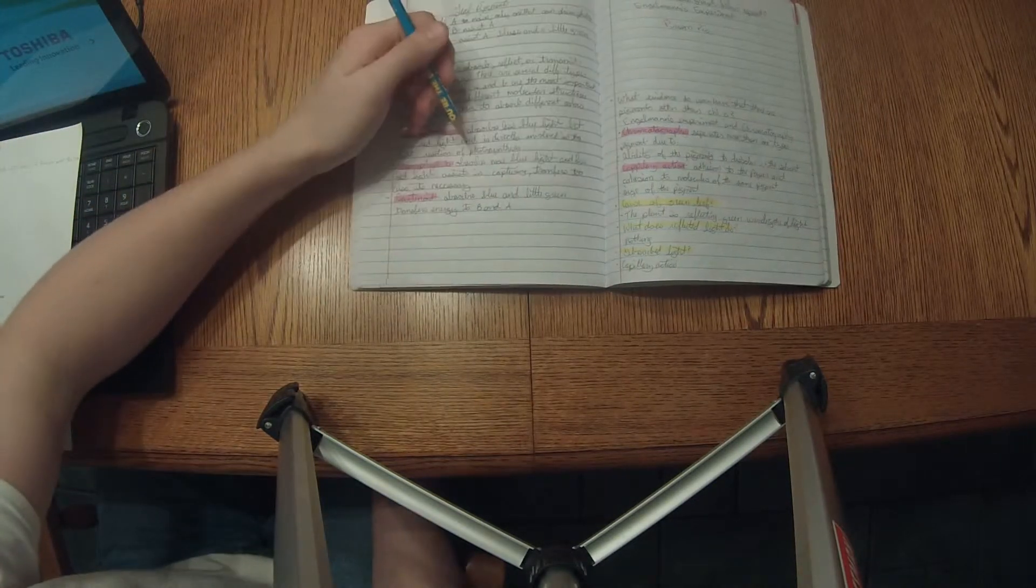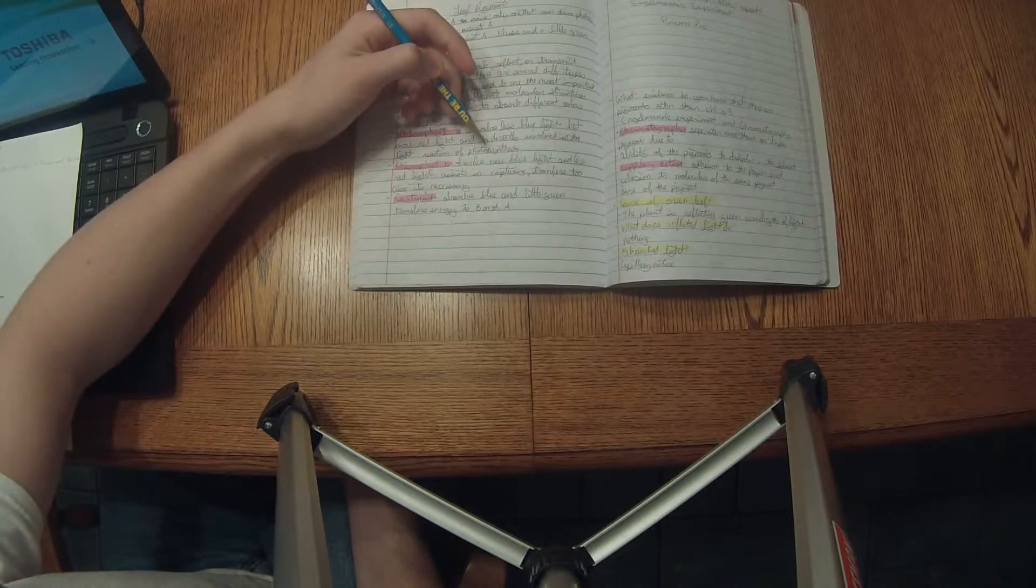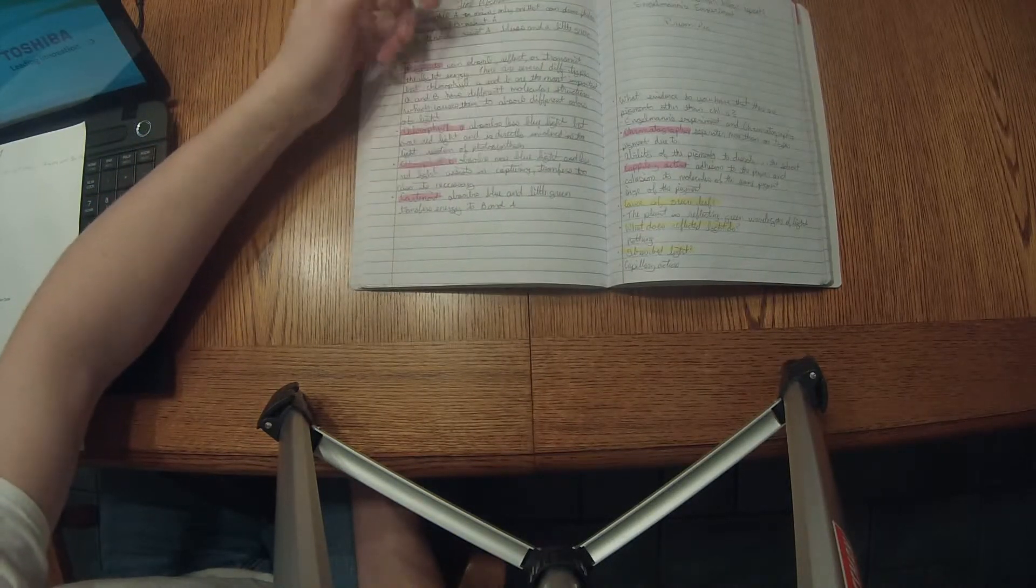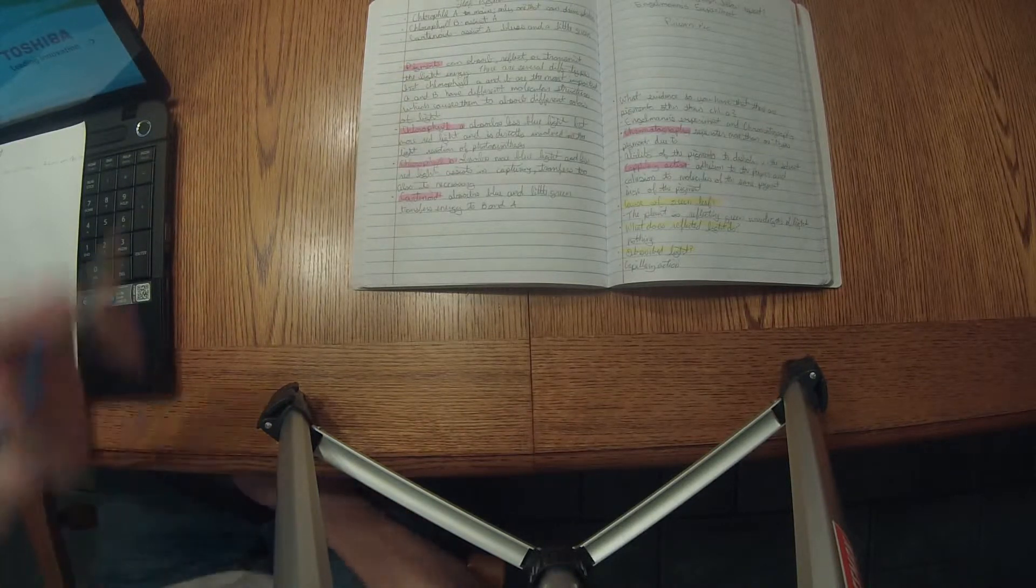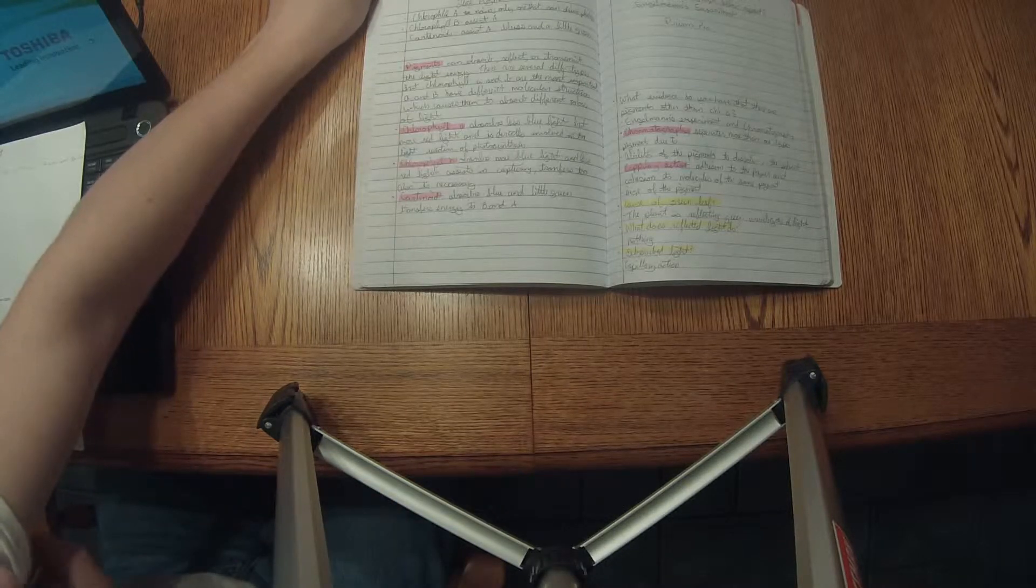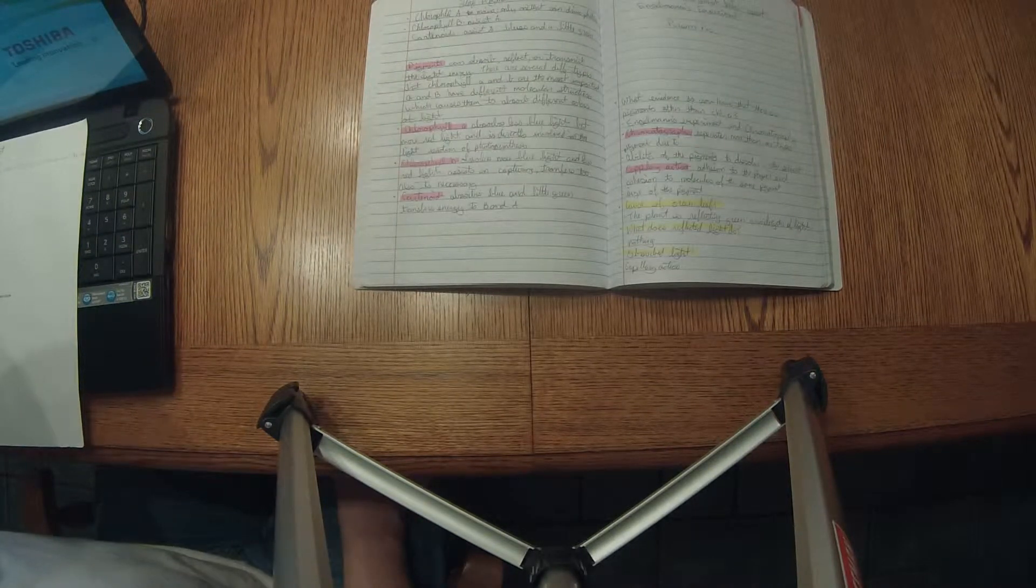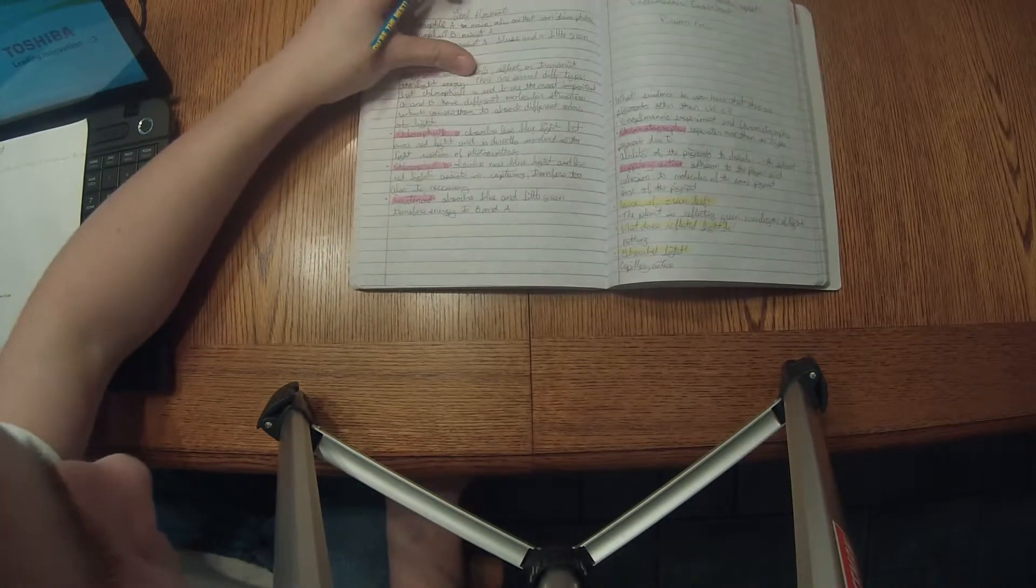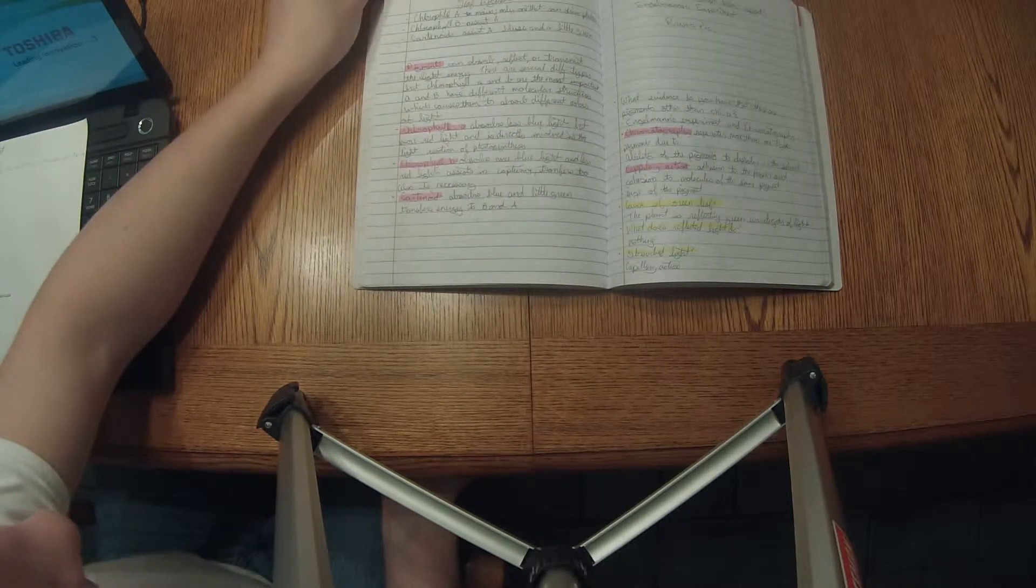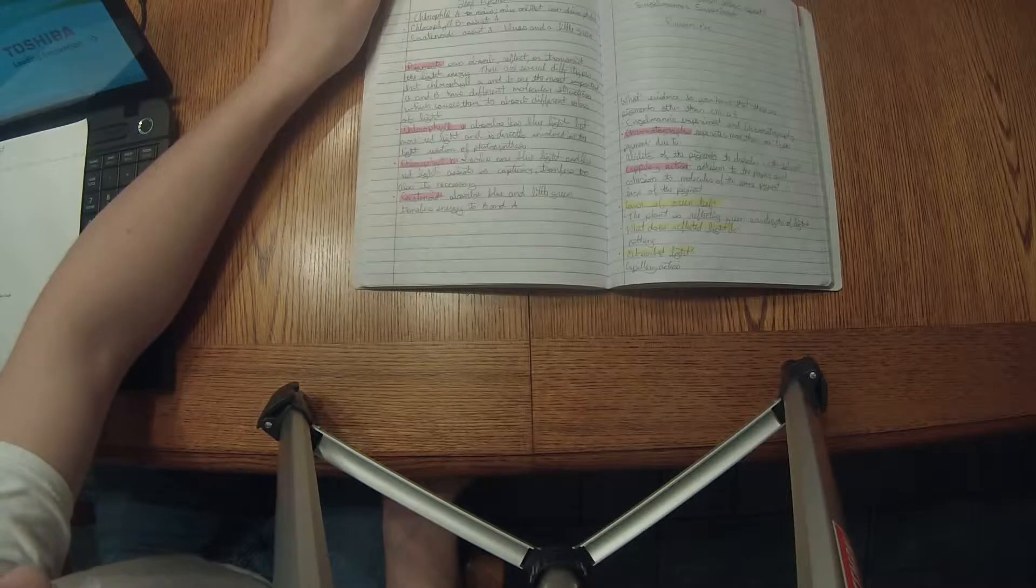Chlorophyll B absorbs more blue and less red light, assists in capturing light and taking it in and transfers to A, and it is also necessary. Carotenoids absorb blue and little green light and transfer energy to B and A, so that's different than B. Chlorophyll A absorbs less blue light but more red light and is directly involved in the light reduction reaction of photosynthesis.